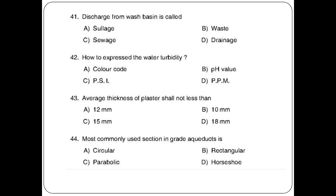Discharge from a washbasin is called — options: waste, sewage, drainage. The answer is option B: waste. How to express water turbidity? Options: color code, pH value, PSI, PPM. The answer is PPM — parts per million.